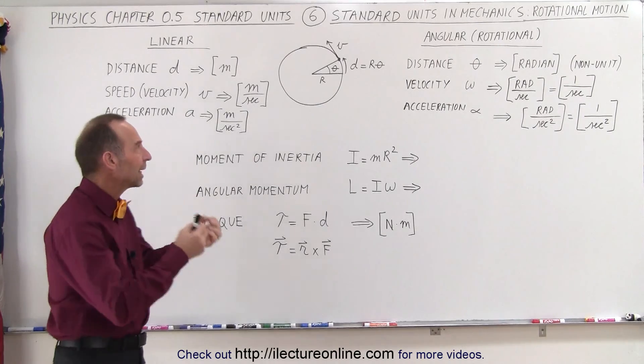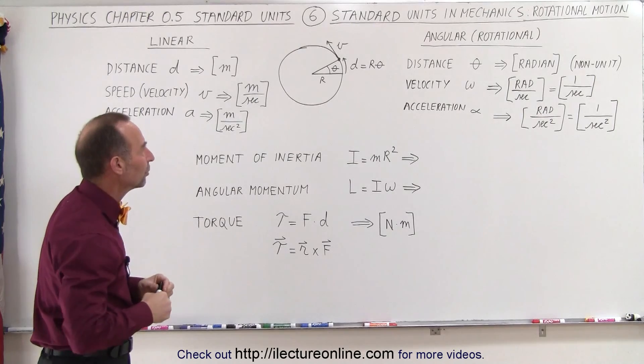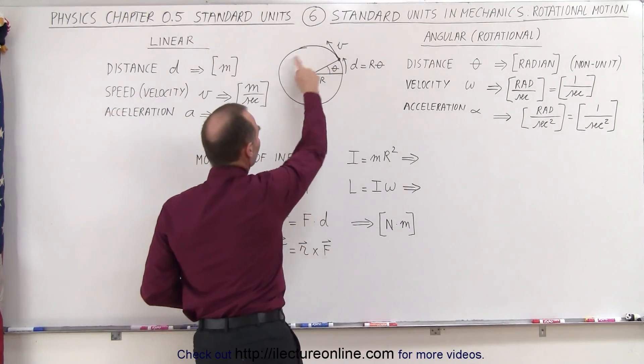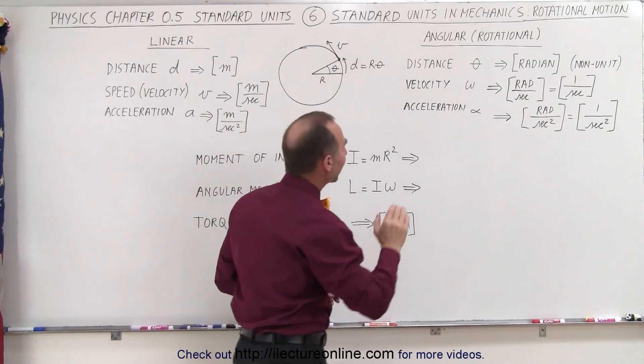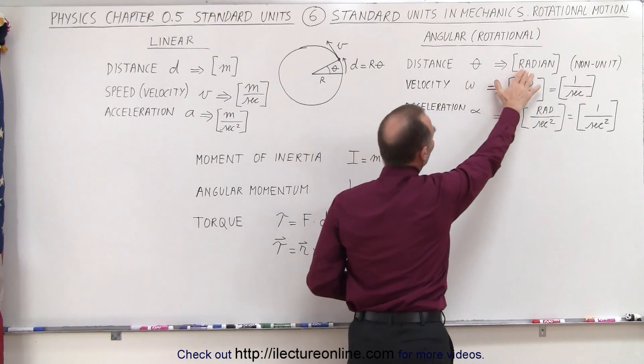But what if we want to explain the motion of something that's rotating about a central point, like an object going around in a circle? Well, the angular or rotational distance is measured in radians.